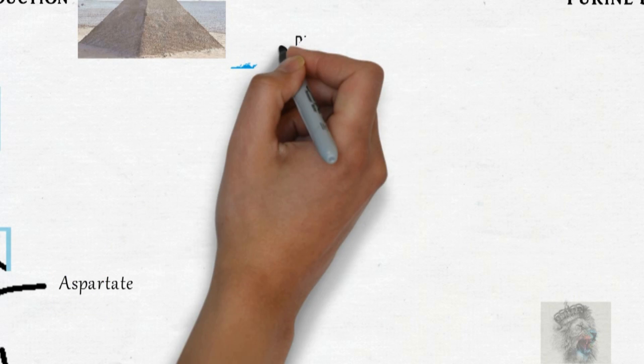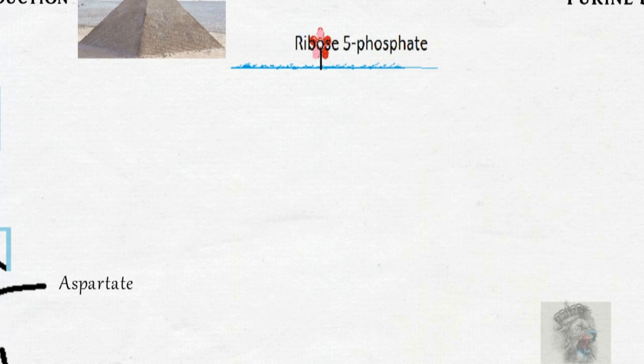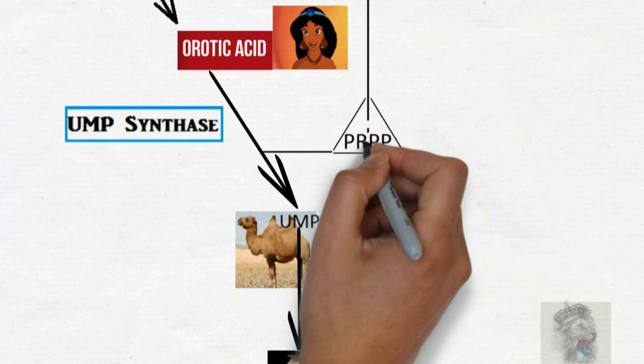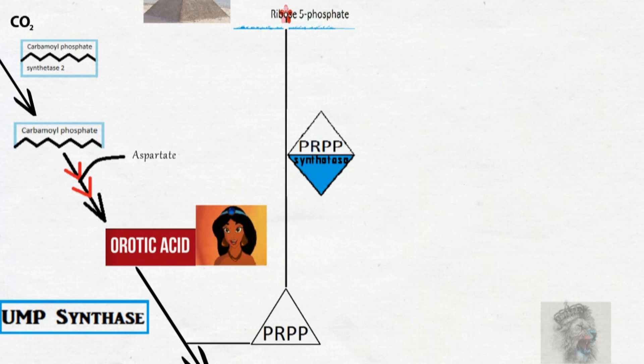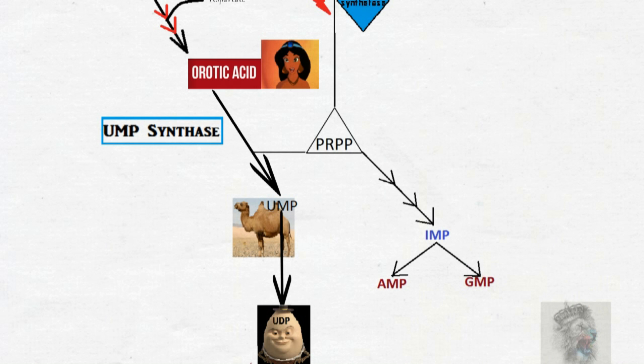Ribose 5-phosphate from pentose phosphate pathway participates in both pyrimidine and purine base production. Let's see how. When ribose 5-phosphate converts into PRPP using PRPP synthetase and ATP, PRPP as phosphoribosyl pyrophosphate with the help of glutamine...